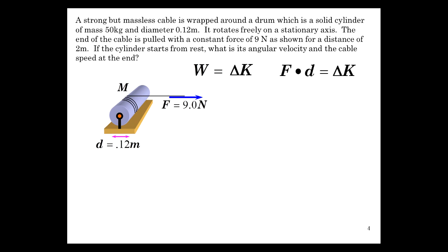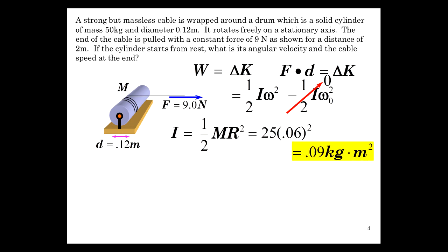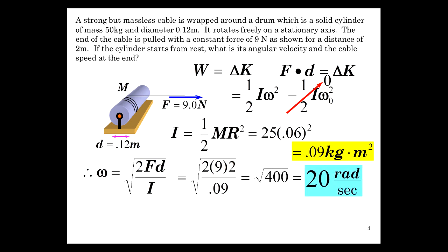So this is an energy problem for us right now. Work is equal to delta K. Force times distance is delta K. Well, now what kind of K do we have? Do we have translational or do we have rotational? Whoops, this way. And you know we have rotational. So rotational kinetic energy we've now covered, and we have the difference. So it's the final, one half I omega squared minus the initial, one half I omega 0 squared. Well, it started from rest, so that term is gone. And now we can solve for omega because we have this and this. F dot D is equal to one half I omega squared. But first let's get the moment of inertia, which we know is one half MR squared because we just obtained that for the solid cylinder. And that number is 25 times 0.06 squared, which is 0.09 kilogram meters squared. Now omega would just be, multiply both sides by 2, divide by I, take the square root, square root of 2 FD over I, plug the numbers in, square root of 400, 20 radians per second. That wasn't too tough.